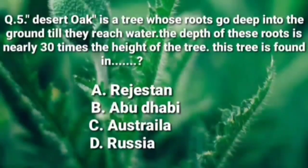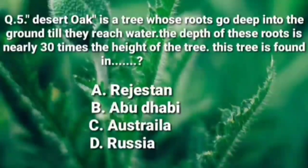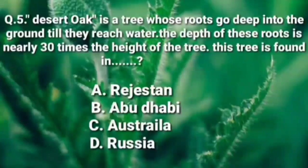The desert tree is a tree whose roots go deep into the ground until they reach water. The depth of these roots is nearly 30 times the height of the tree. This tree is found in — option B is Abu Dhabi, option C is Australia. The correct option is the answer for this NCRT question.